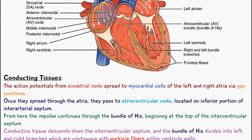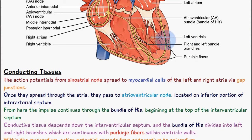From here the impulse continues down to the bundle of His, which begins at the top of the interventricular septum. It passes down the bundle of His, which then divides into the left and right branches, and these are continuous eventually with the Purkinje fibers.